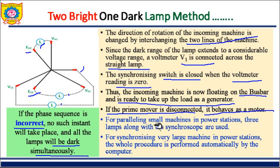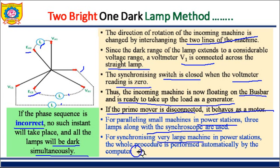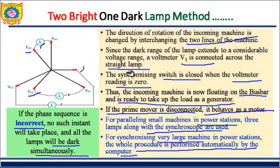For paralleling small machines in power stations or generating stations, the three lamp method along with synchronoscopes is used. For synchronizing very large machines, the whole process is done automatically by computer. All the processes we have seen so far are manual processes, but now with synchronoscopes we can perform this operation using computer software. Thank you.